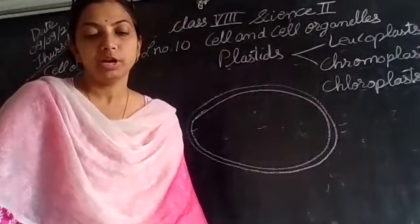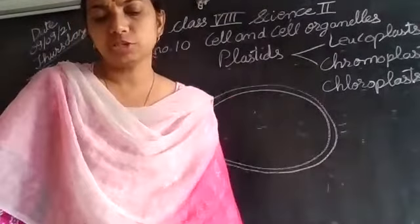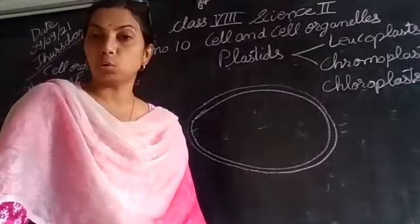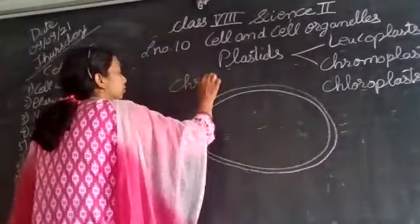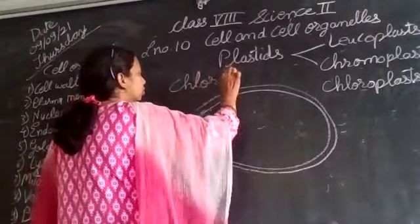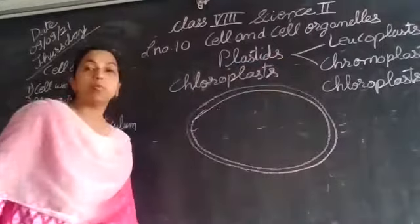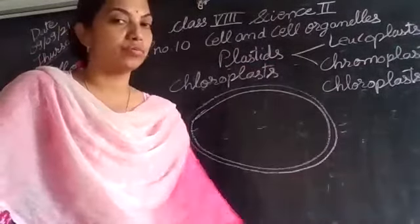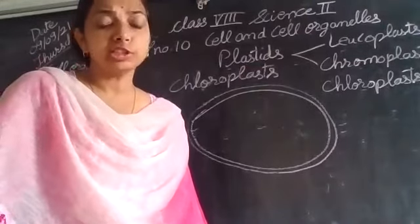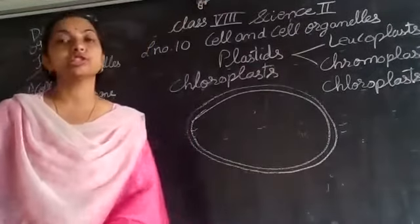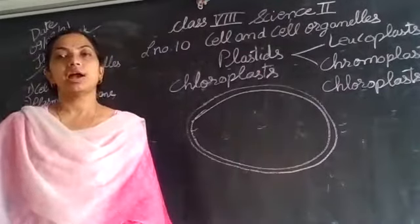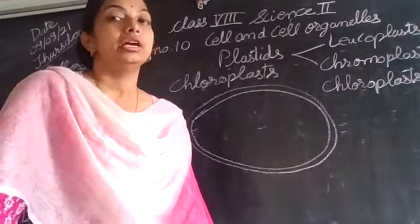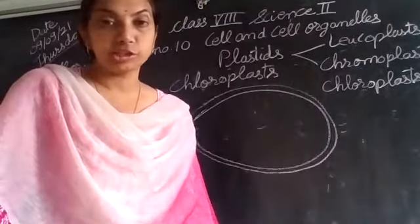Chloroplasts can even be observed under the microscope if you take a thin peel. Chloroplasts are very important for photosynthesis because they possess chlorophyll. Chlorophyll is very important for photosynthesis; without this green pigment, photosynthesis is not possible — even if sunlight, carbon dioxide, and all other necessary things are available. But if chlorophyll is not there, then photosynthesis cannot take place.